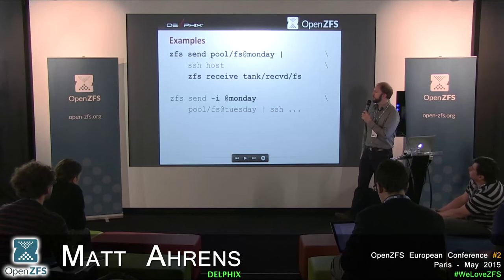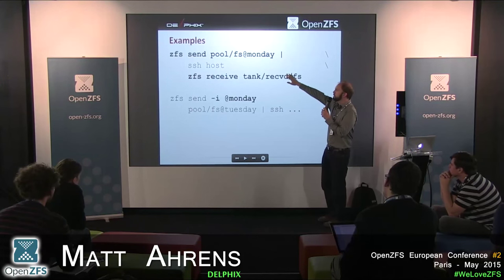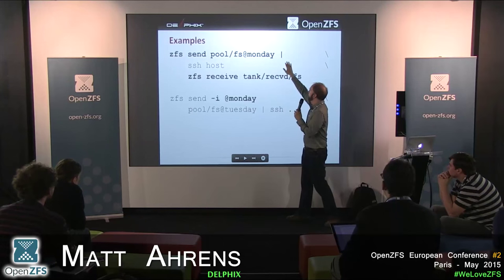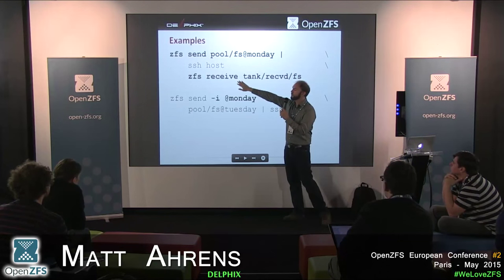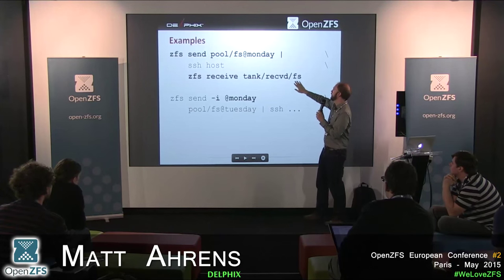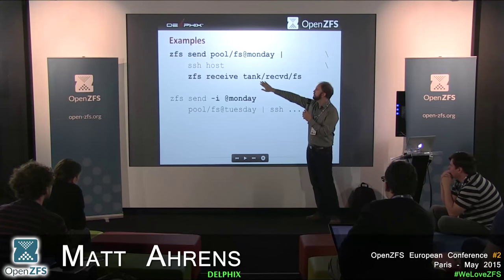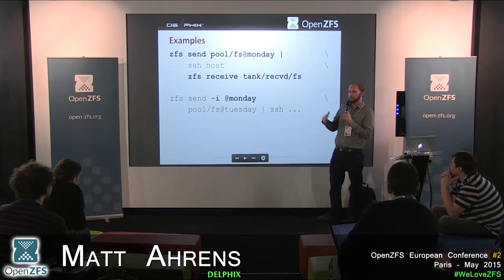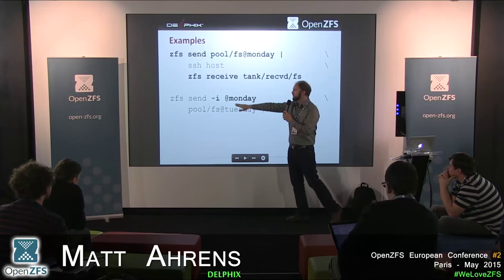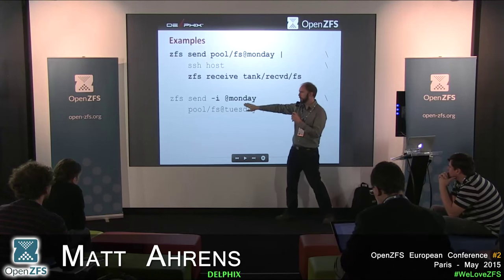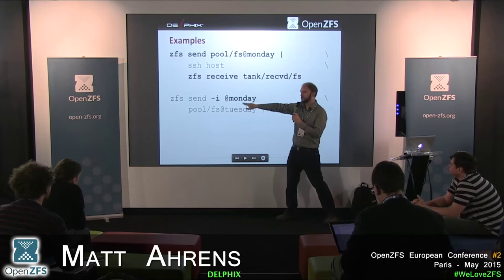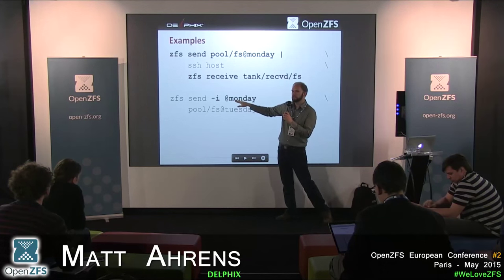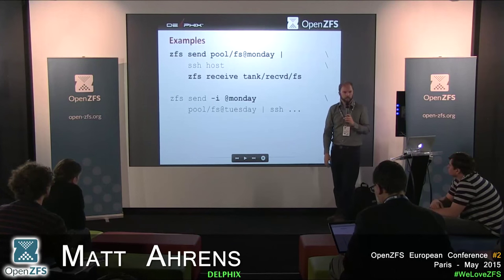Here's a command-line example: do a full send of a snapshot — pool/fs@Monday — pipe the output over SSH into ZFS receive to create the file system received/fs on the target machine. The next day, do an incremental with ZFS send -i specifying the Monday snapshot, so the target receives only the differences from Monday to Tuesday, then SSH that to ZFS receive.